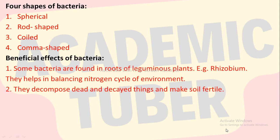Beneficial effects of bacteria. Some bacteria are found in the root of leguminous plants, for example Rhizobium. They help in balancing the nitrogen cycle of the environment. They decompose dead and decayed things and make soil fertile.